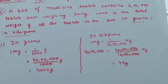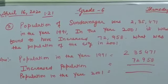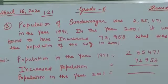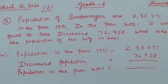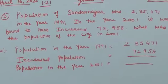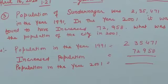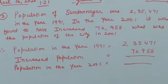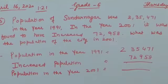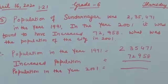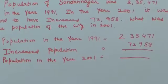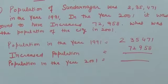Now come to sum number three. Question number three, you will not write the statement on the notebook. Only look at your book, only write the answer. Third sum: population of Sundar Nagar was 2,35,471 in the year 1991. In the year 2001, it was found to have increased by 72,958. What was the population of the city in 2001?